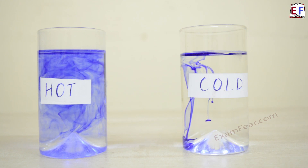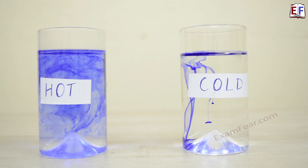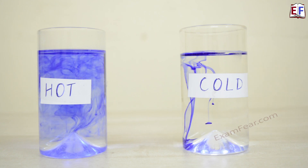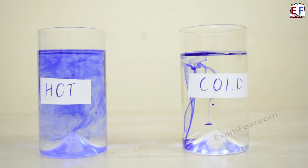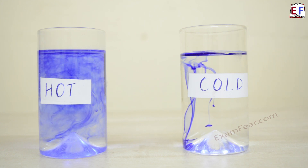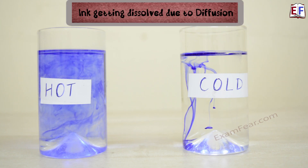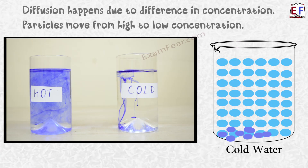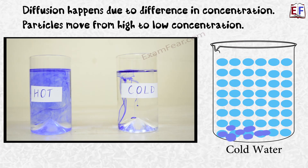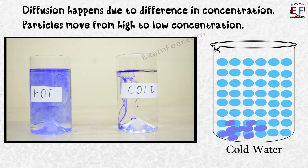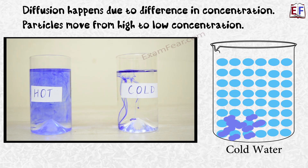So why is this different? Why is the ink kind of getting mixed with water? This is happening due to diffusion. Whenever there is a difference in concentration between two substances, the particles tend to move from a region of higher concentration towards a region of lower concentration. And the same thing is happening here.